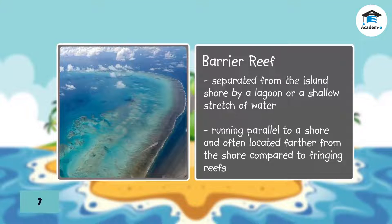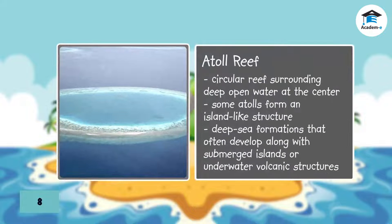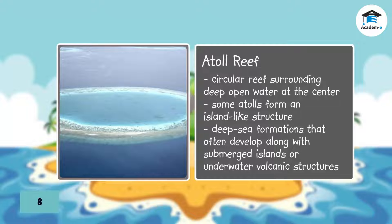A barrier reef is a reef that is separated from the island shore by a lagoon or a shallow stretch of water. They run parallel to a shore and are often located farther from the shore compared to fringing reefs. An atoll reef is a circular reef surrounding deep open water at the center. Some atolls form an island-like structure and are deep-sea formations that often develop along with submerged islands or underwater volcanic structures.